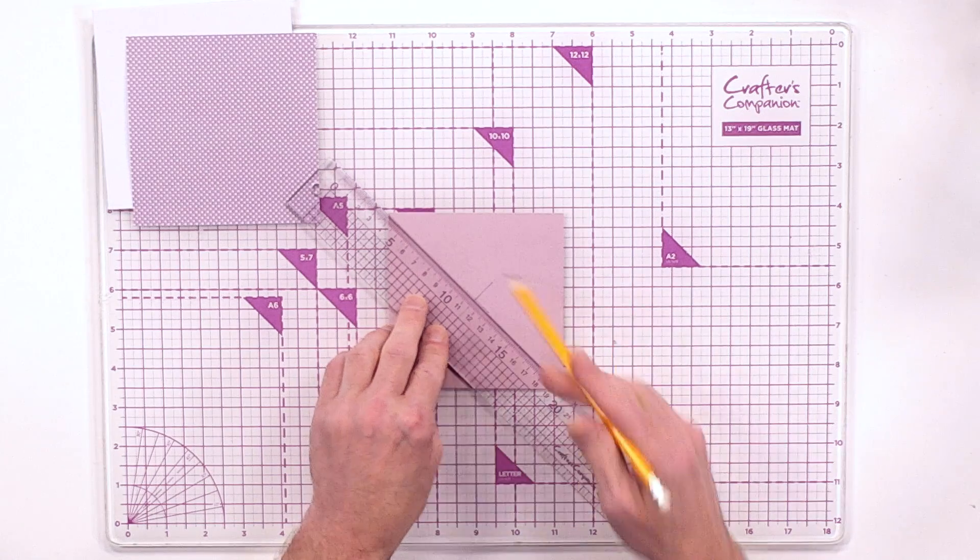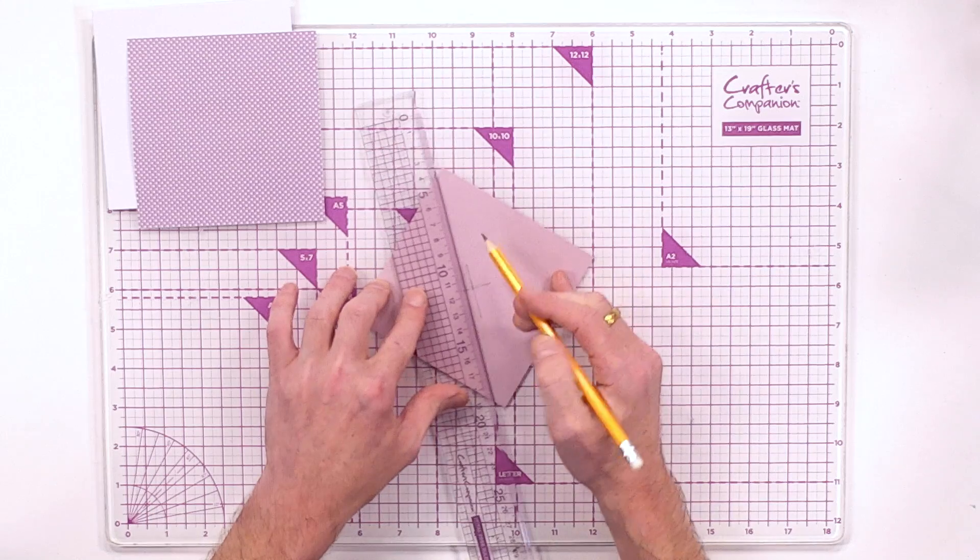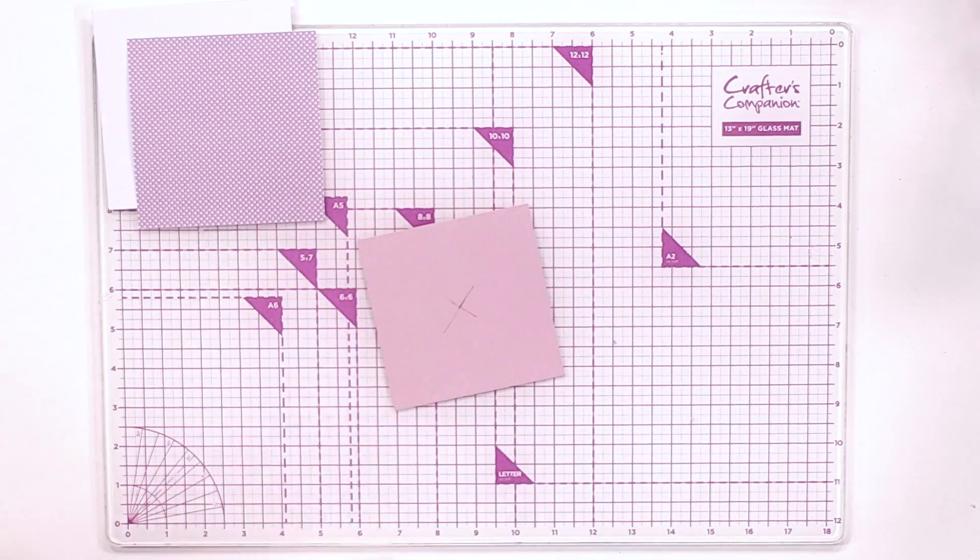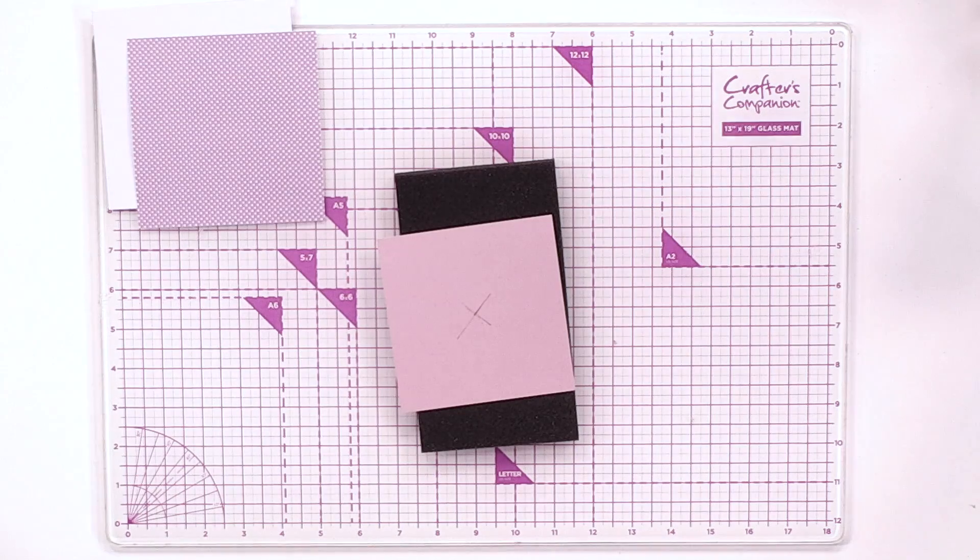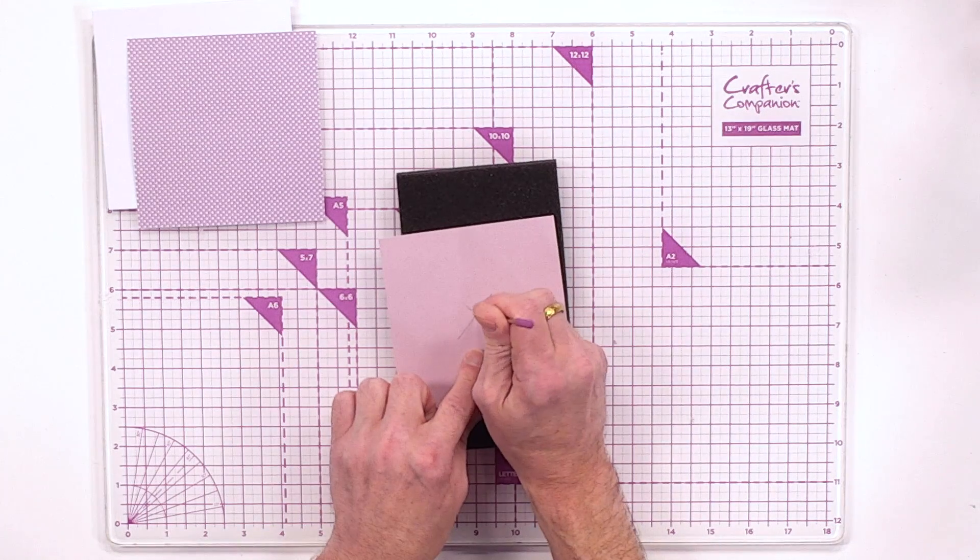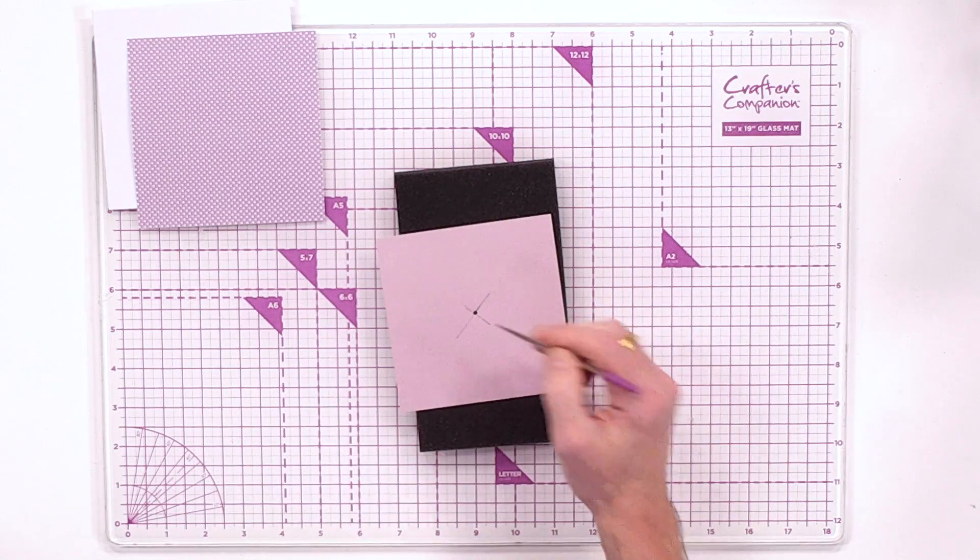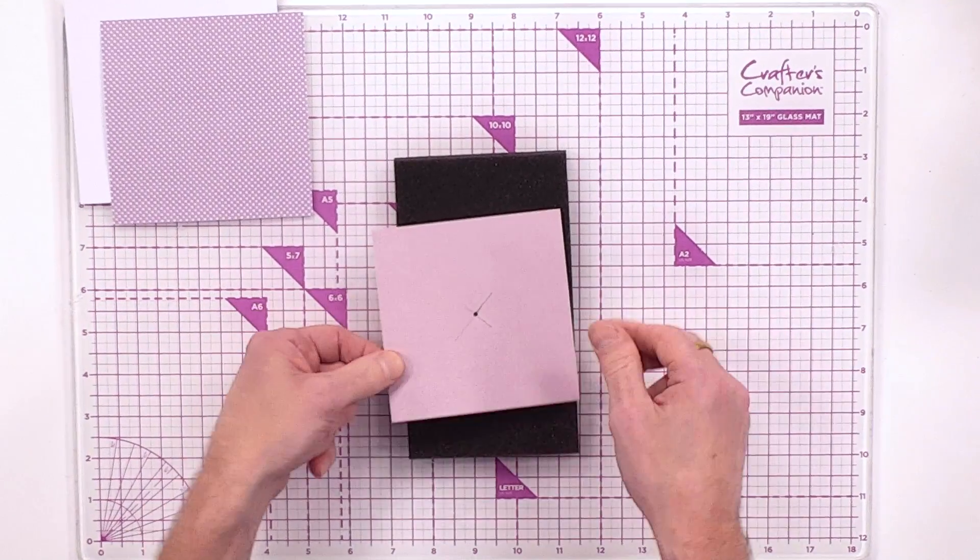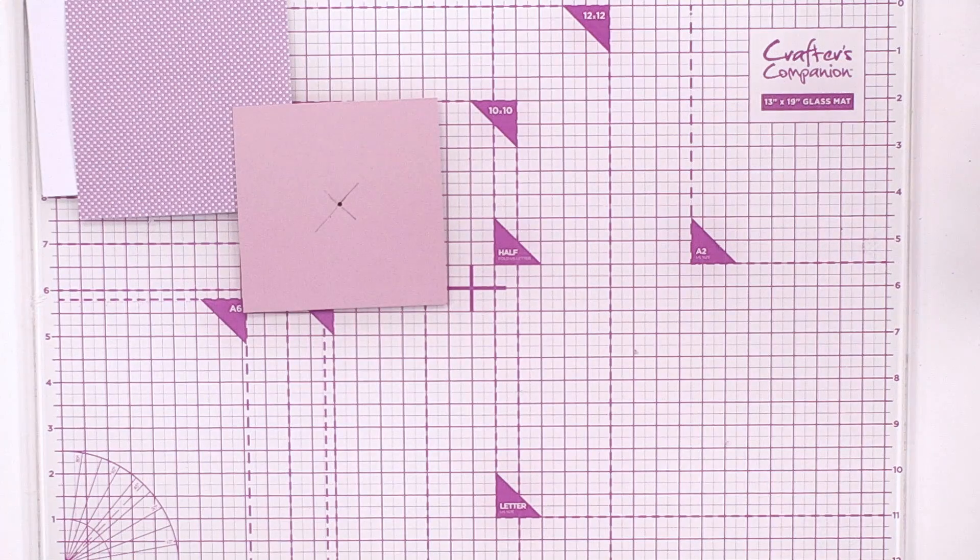You'll see that I've already lightly done this, I'll do it again just to show you. From edge to edge I'm putting a little pencil line so that I can find the center of my card mat. Then with a little sponge mat or something soft with my pokey tool I'm going to pop a little hole into the middle. Don't worry about the pencil lines, they won't be seen but you can rub them out with an eraser if you wish.